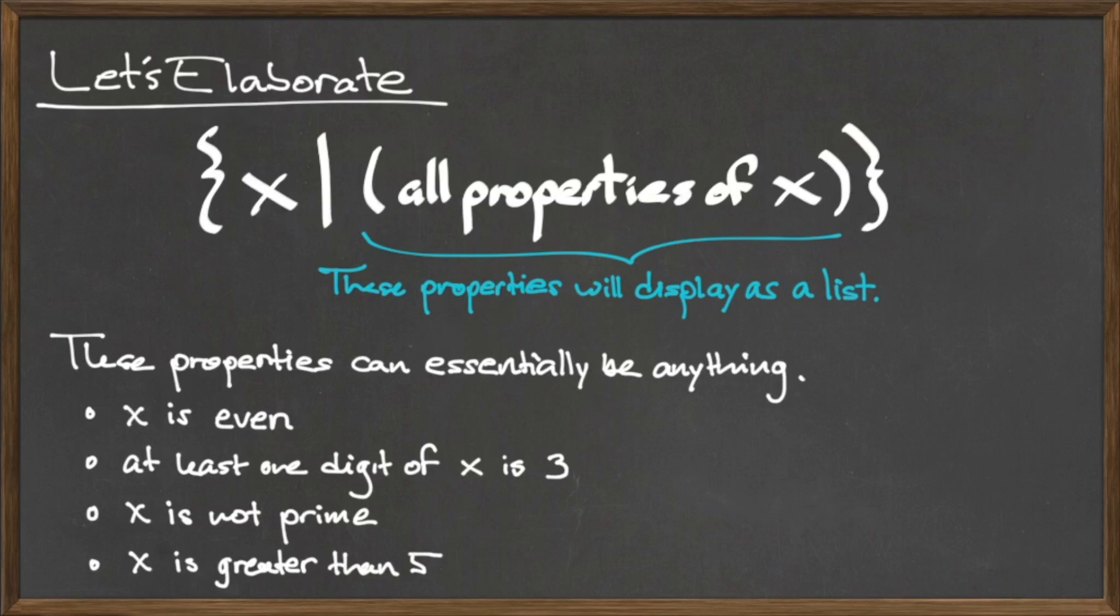For example, properties could be x is even, at least one digit of x is 3, x is not prime, or x is greater than 5.